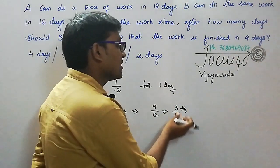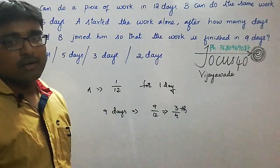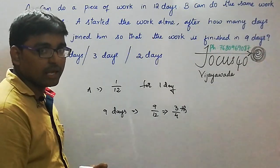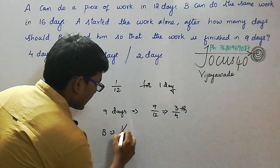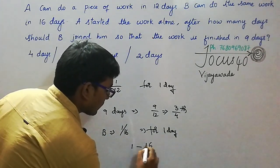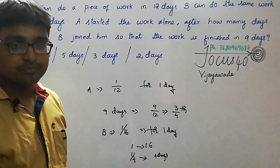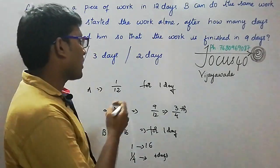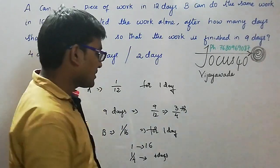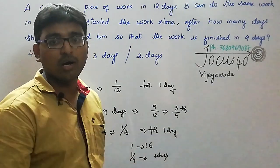The remaining 1/4 of the work should be finished by B himself. We know B's capacity — he can finish the total work in 16 days, meaning he can do 1/16th of the work in 1 day. So B finishes 1/4 of the work in 4 days. The question is not asking how many days B worked, but how many days after A started that B joined.